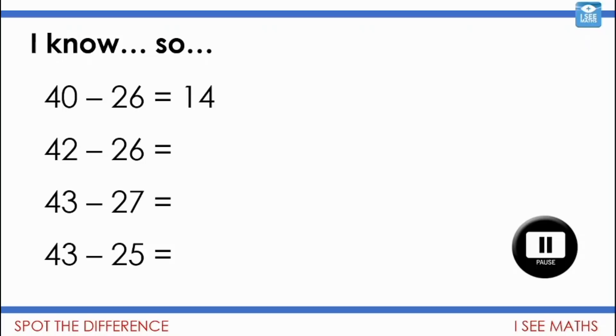Well let's have a look. 40 subtract 26 is 14. 42 subtract 26. Well 2 more than that it will be 16. 43 that's one more than 42. 27 is one more than 26. So I think the difference will stay the same. Yep. And what about 43 subtract 25. Well this time of course I'm taking away 2 less. So the answer will be 2 more. And there I can really see the pattern. Great job everyone.